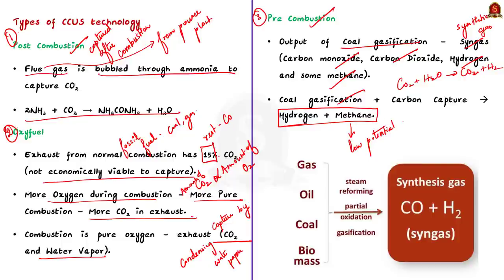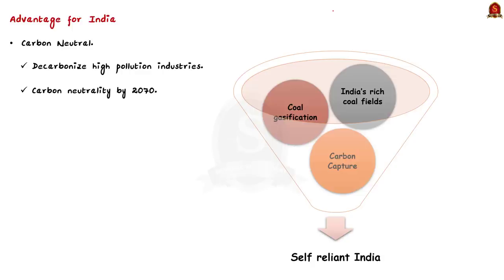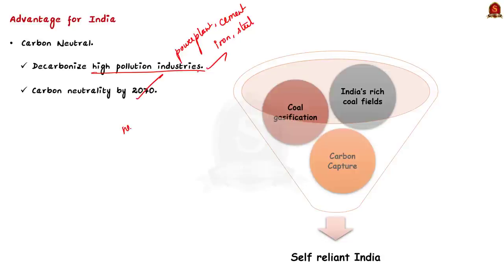Having seen the three types of CCUS technology, let us move on to the advantages for India. Firstly, by adopting this technology, India can decarbonize its high pollution sectors like thermal power plants, cement, iron, steel, etc. It will also help India achieve carbon neutrality by the year 2070 — our net zero emissions target.